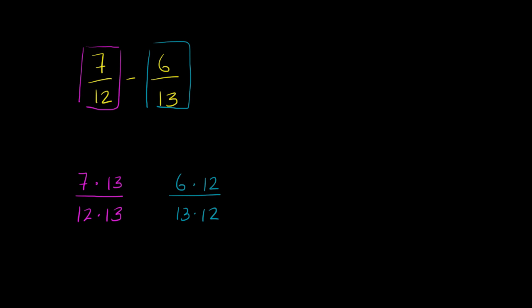But now we are ready to subtract. And you might say, hey, Sal, hold on. Wait, what do these actually evaluate to? Well, maybe that's a good idea. Let's figure that out first. So this is equal to 7 times 13. Let's see. 7 times 13 is 70 plus 21. It's 91 over 12 times 13. Let's see, I haven't memorized my 13 times tables. So we know that 12 times 12 is 144. You put on one more 12, you get to 156. 156. So 91 over 156 is the exact same thing as 7 twelfths. I just multiplied the numerator and the denominator by 13.